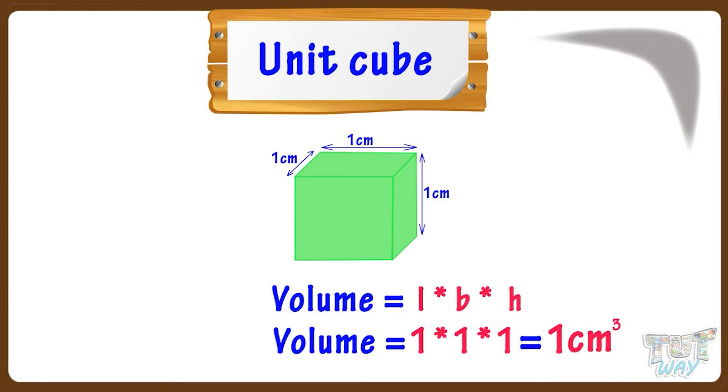We learned a unit cube is a cube with length, width, and height equals one centimeter. And its volume is one centimeter cube.